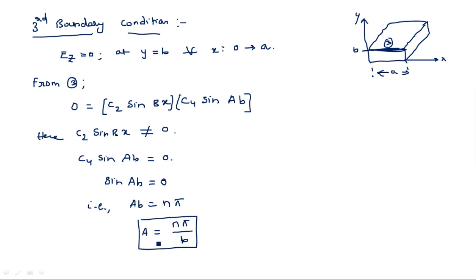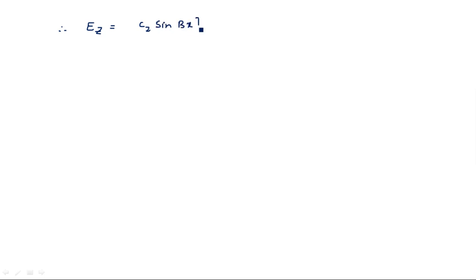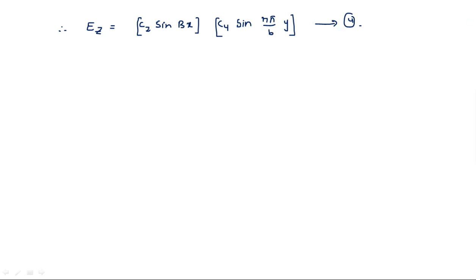We had assumed (1/Y)·d²Y/dy² = −α², and now we have determined α = nπ/b. Substituting α = nπ/b into equation 3, the updated equation after the third boundary condition is: ez = c2·sin(βx) · c4·sin(nπy/b). The fourth boundary condition and further simplification will be explained in the next video.